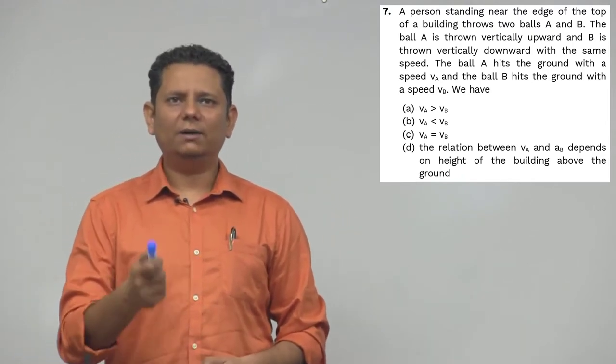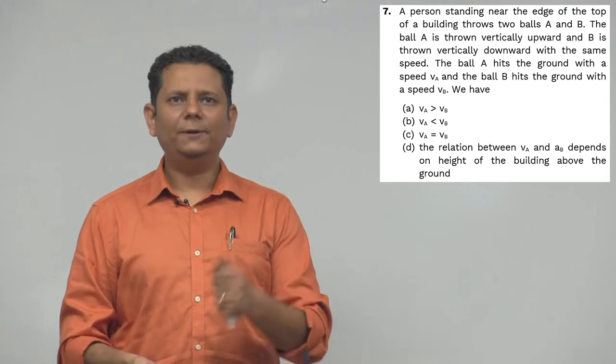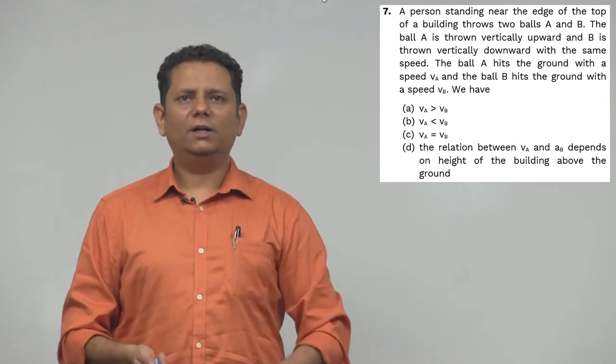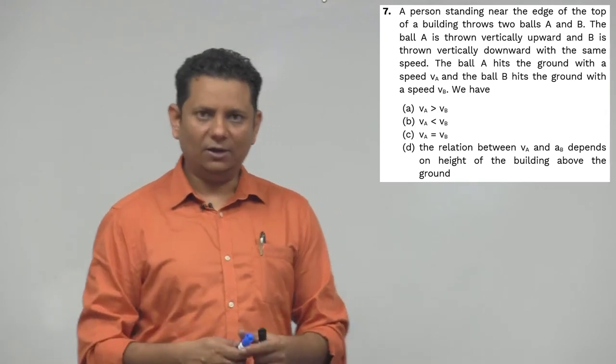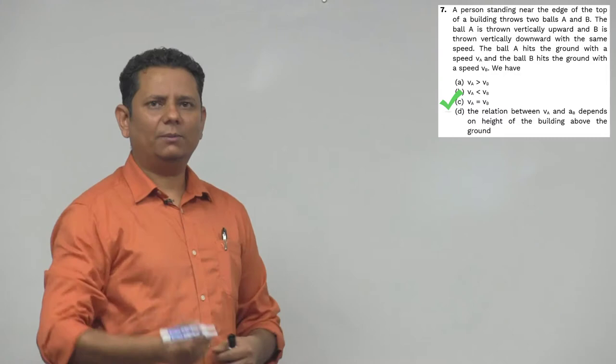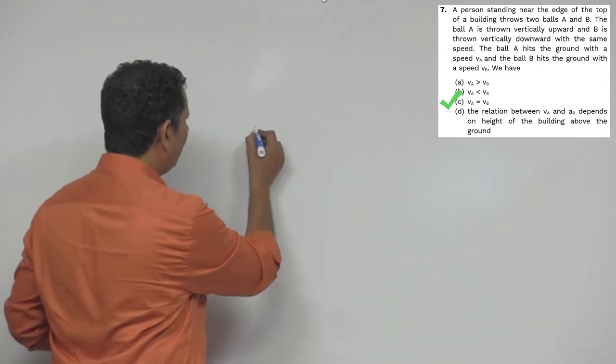We have to compare va and vb. The first option is va greater than vb, second is less than, third is equal, fourth is it will depend on the height of the building. The right answer will be option C - va and vb will be equal.